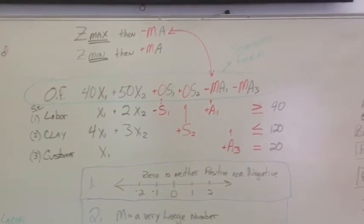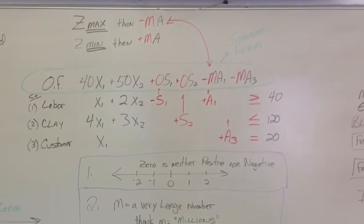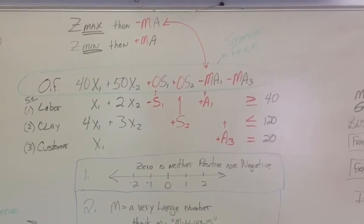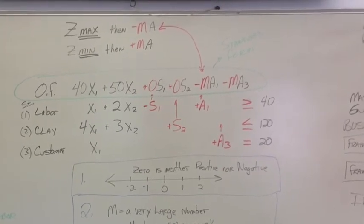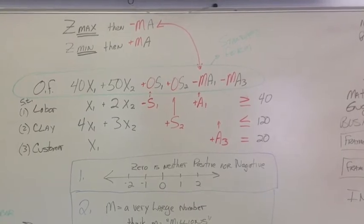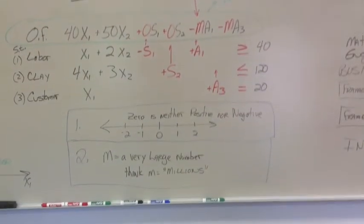Of course, the first thing people say is, hey Ed, in the labor constraint, it's minus S1. Why is it plus 0 times S1 in the objective function? If you look down, number 1 here,